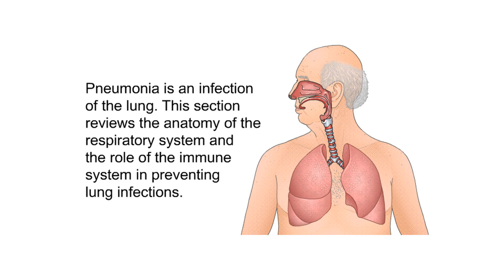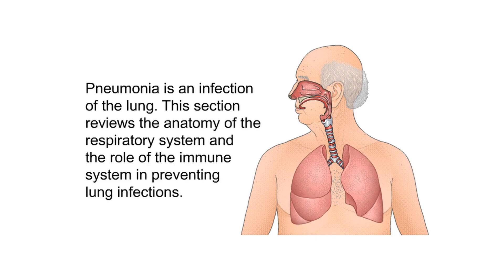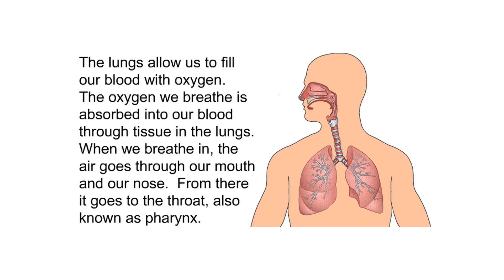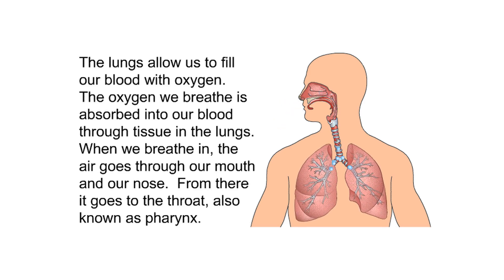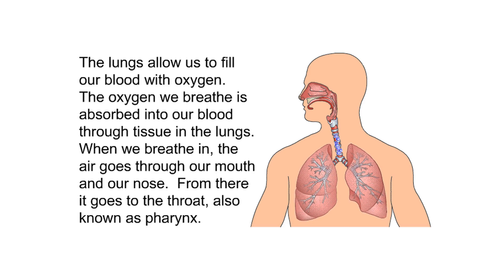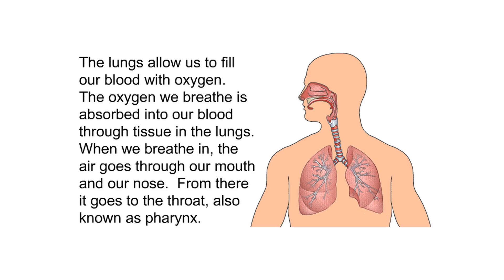Pneumonia is an infection of the lung. This section reviews the anatomy of the respiratory system and the role of the immune system in preventing lung infections. The lungs allow us to fill our blood with oxygen. The oxygen we breathe is absorbed into our blood through tissue in the lungs. When we breathe in, the air goes through our mouth and nose, then to the throat, also known as the pharynx.